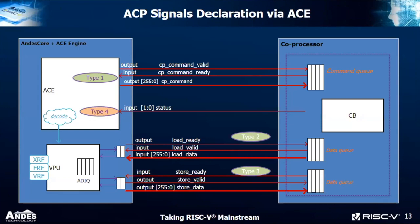You can also connect to a processor via a custom port. There are four types of application: Type 1 uses command and command-ready for handshaking, sending a command with 256-bit width. Type 2 loads data from the processor after handshaking. Type 3 stores data to the coprocessor after handshaking. Type 4 reads the status of the coprocessor. In this way you have good communication with a coprocessor outside the CPU.